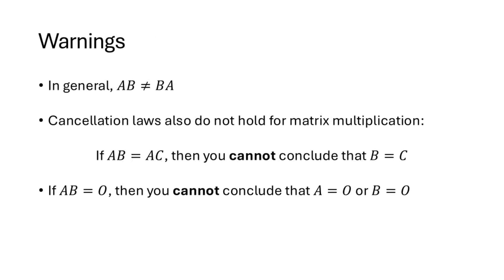There are more algebraic properties that don't work for matrix multiplication. For example, we can't cancel: if AB equals AC, our intuition might lead us to think we can cancel the A's from both sides, but we can't necessarily conclude that B equals C. Another property we're used to is that if two things multiplied together equal zero, then one of them must be zero — but that's also not true for matrices. If A times B equals the zero matrix O, we can't conclude that either A or B equals O. We have to be more careful, since matrix multiplication is not commutative.